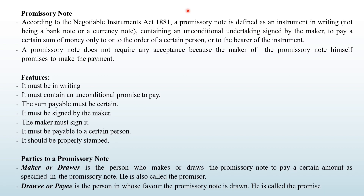A promissory note is a promise to pay. The features include: it must be in writing, it must contain an unconditional promise to pay, the sum of payment must be specified, and it must be signed by the maker. A stamp is also required.